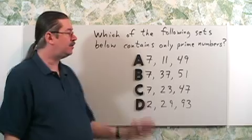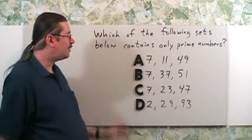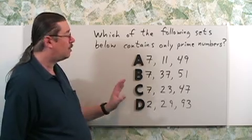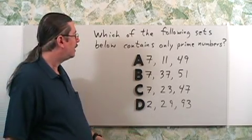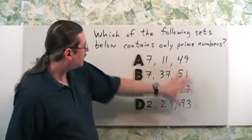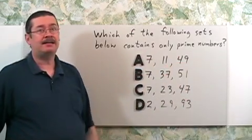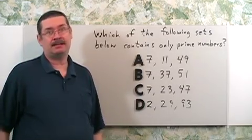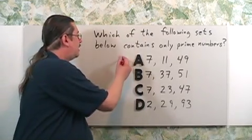Probably the best way to solve this problem is through process of elimination. Try to get rid of numbers that you know are not prime. Quick glance through here, I noticed 49 is not prime. It's divisible by 7. 7 times 7 is 49. So I know A cannot be the answer.